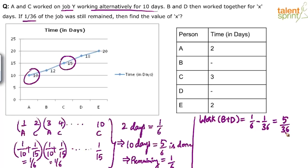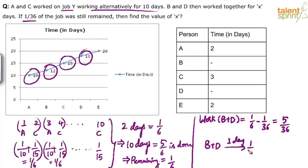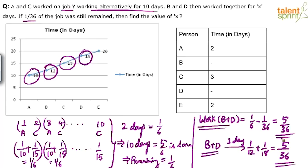5/36 of the work has been done in x days — what is the value of x? B in one day can finish 1/12; D in one day can finish 1/18. So B and D together in one day finish 1/12 plus 1/18. The LCM of 12 and 18 is 36: that gives 3/36 plus 2/36 = 5/36. B and D working one day can finish 5/36 of the work — which is exactly the amount they needed to finish. So x equals one day.